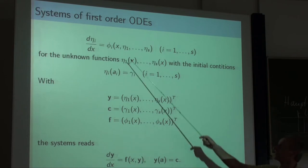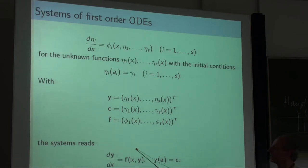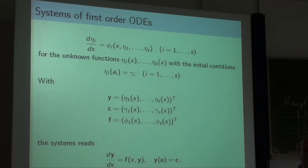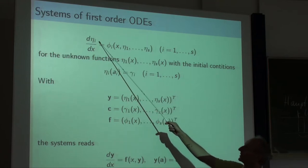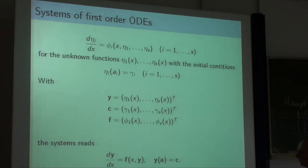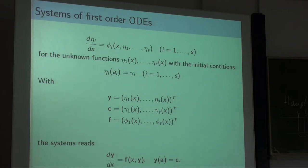We can write the system of differential equations as: the derivative with respect to x of the vector y equals the vector-valued function f. The derivative of the vector y is just the vector consisting of all component derivatives, and here we have the vector-valued initial condition.